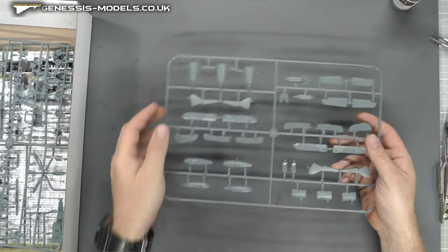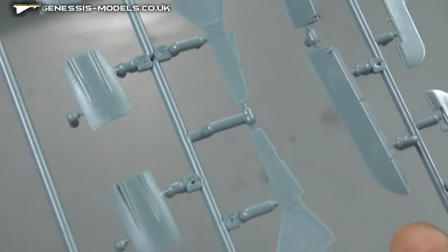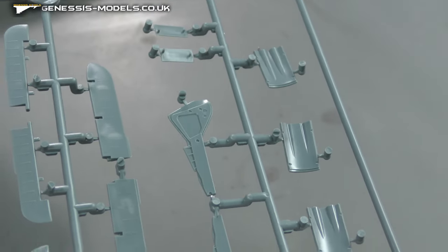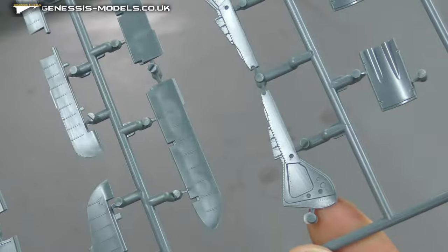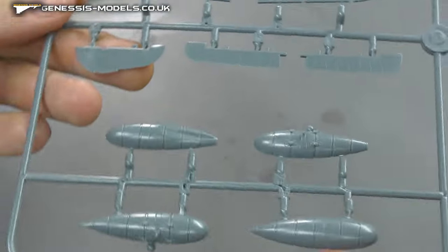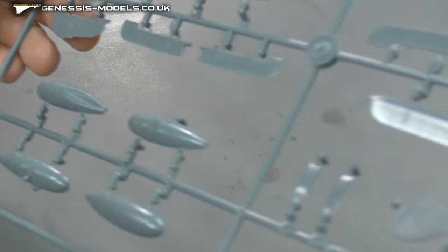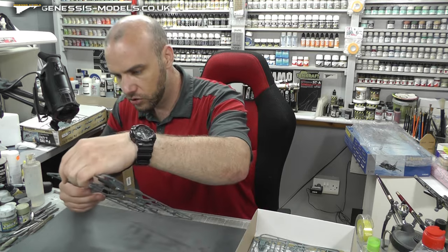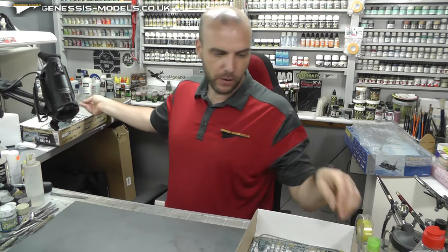We've got another couple of sprues here with all our little bits and bobs. Landing gear, lovely surface detail. We have no ejector pin marks on there, which sometimes you do, but not with this kit. Lots of detail on there. We've got some free-fall bombs looking quite good. We've got some fuel tanks with bags of detail, can't fault it. We've got a couple of engine cowls here, probably a couple of different versions.